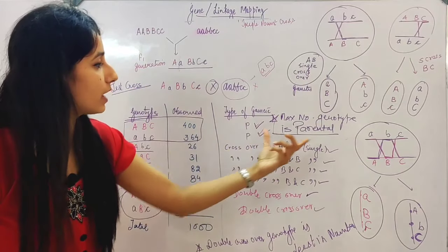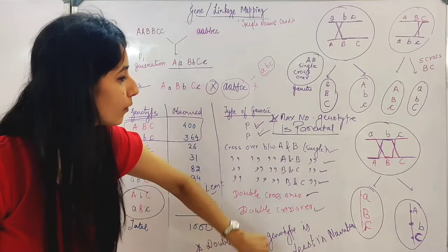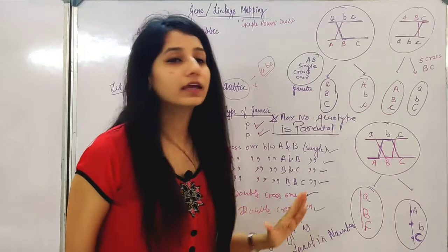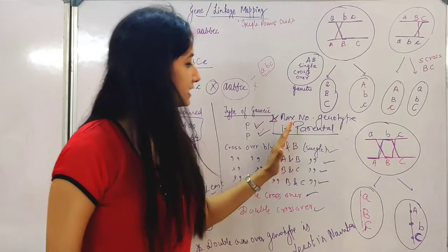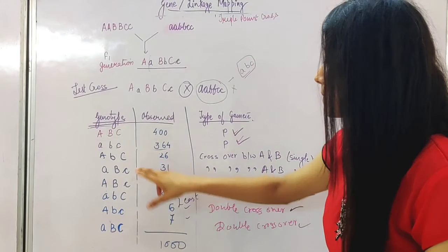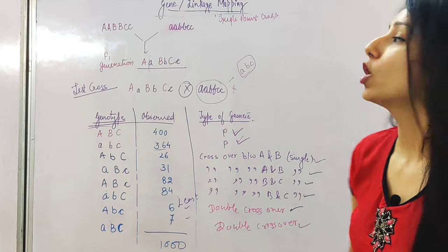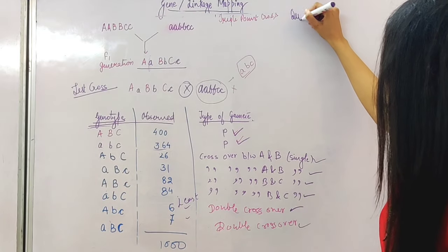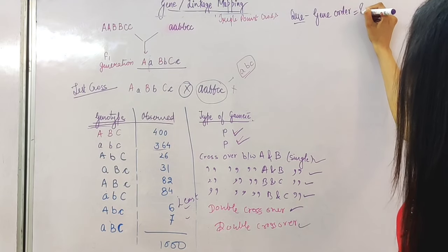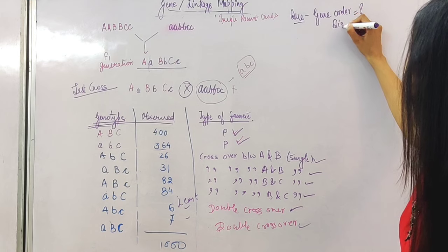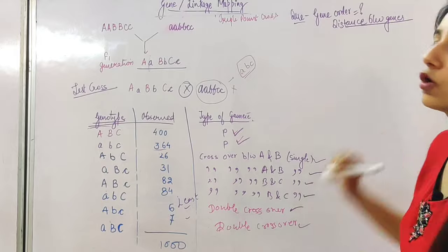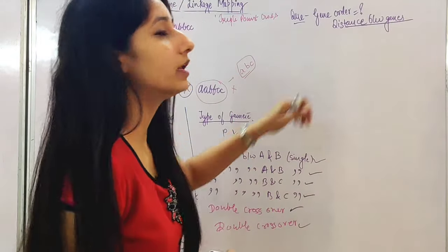If you keep these two points in mind, you will be able to solve questions well. Now let's look at CSIR previous year questions. In the question we've been given, two things are asked: what is the gene order, and what is the distance between genes? Gene order means how genes are arranged on the chromosome — whether it is A, B, C or A, C, B, or B, A, C, etc.